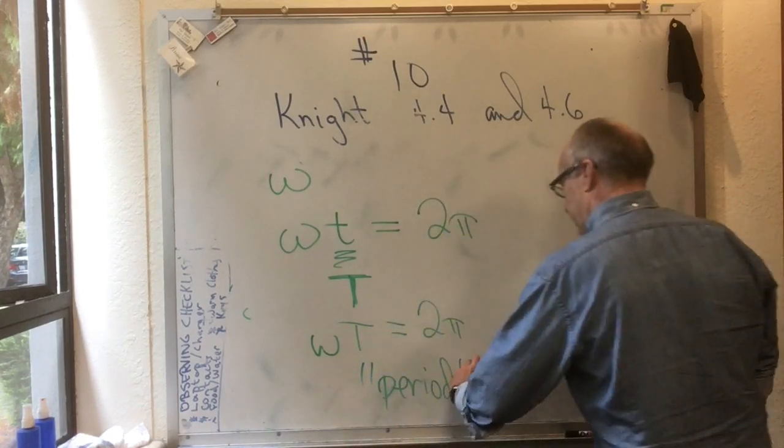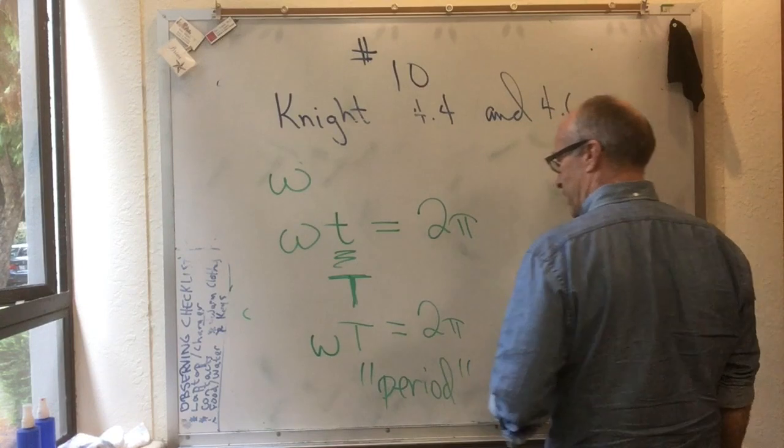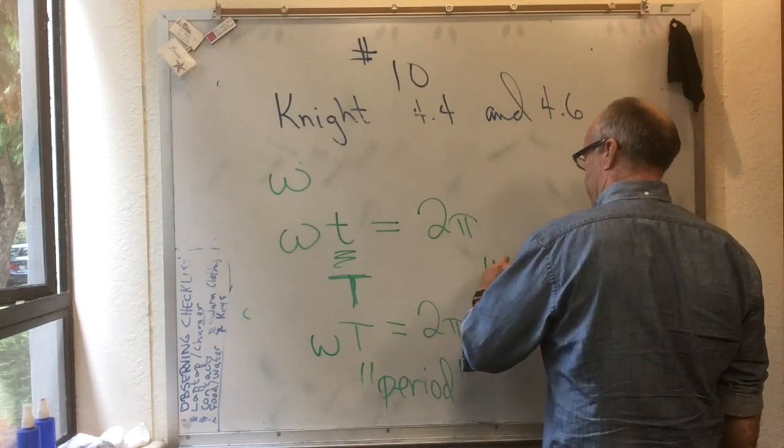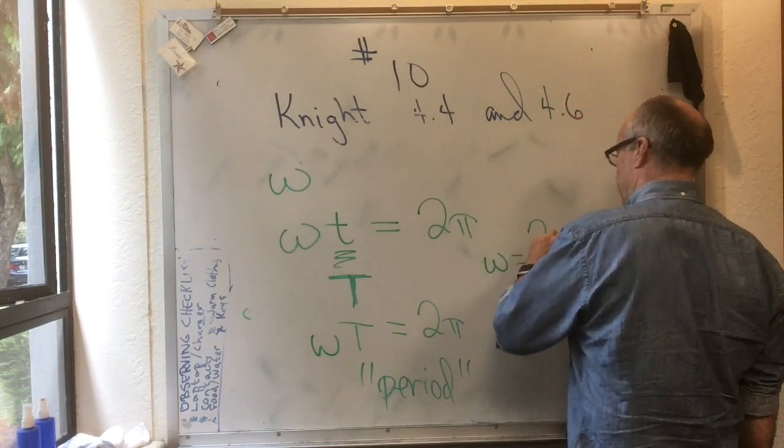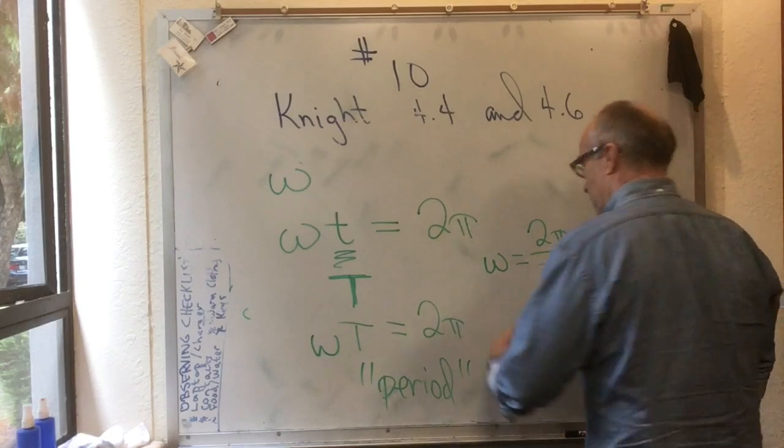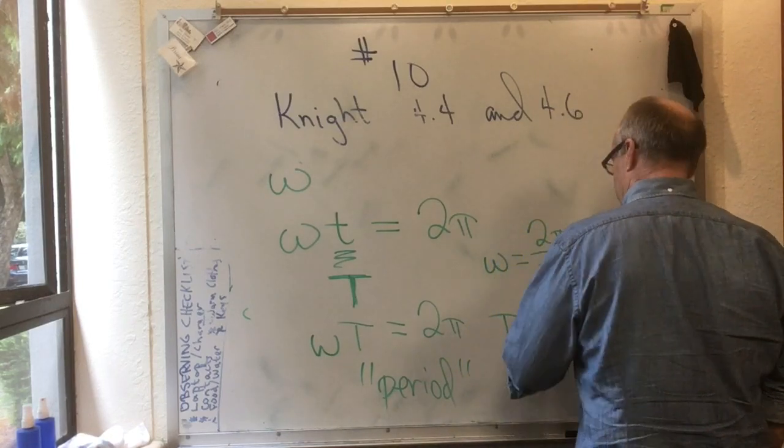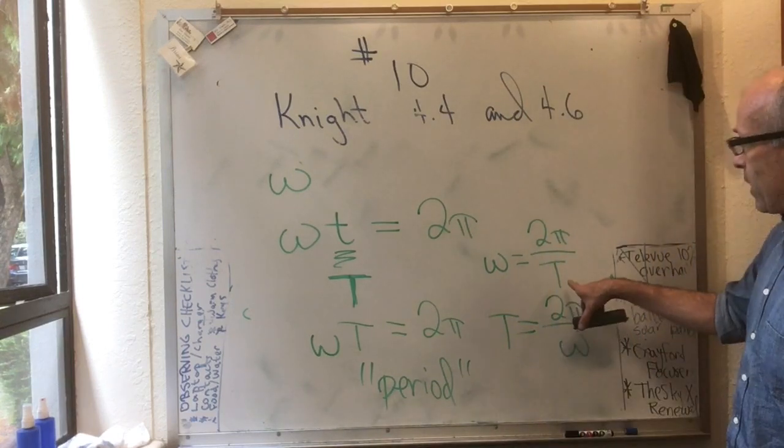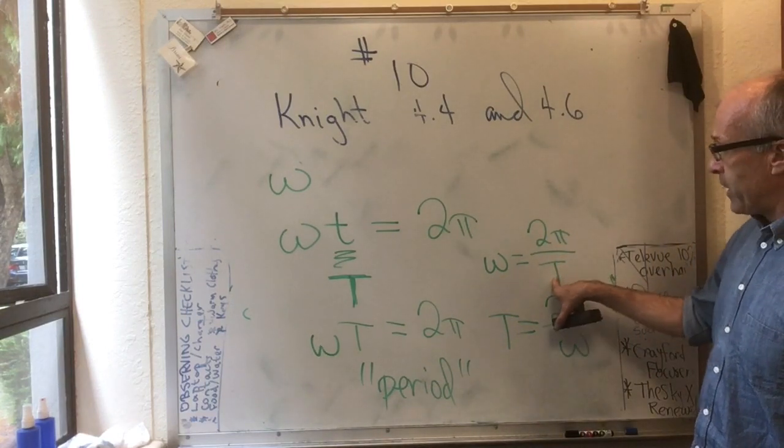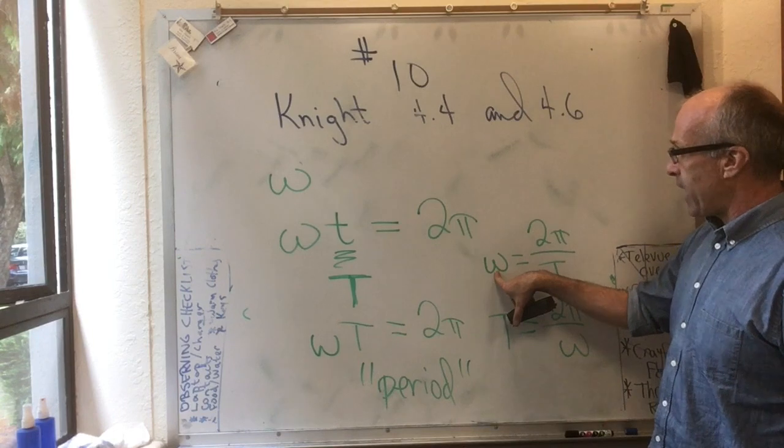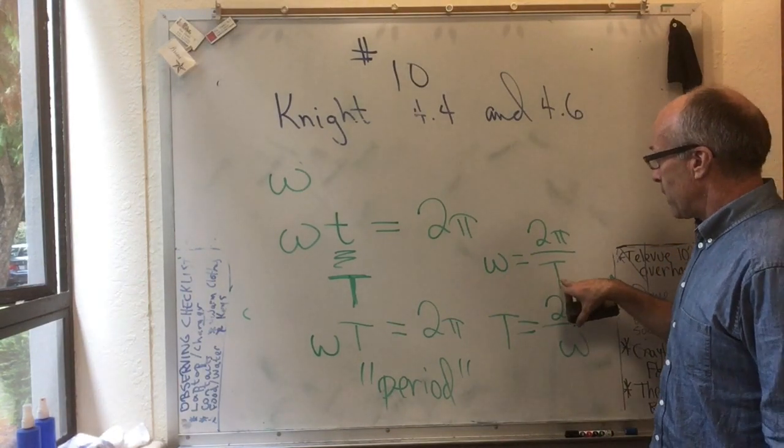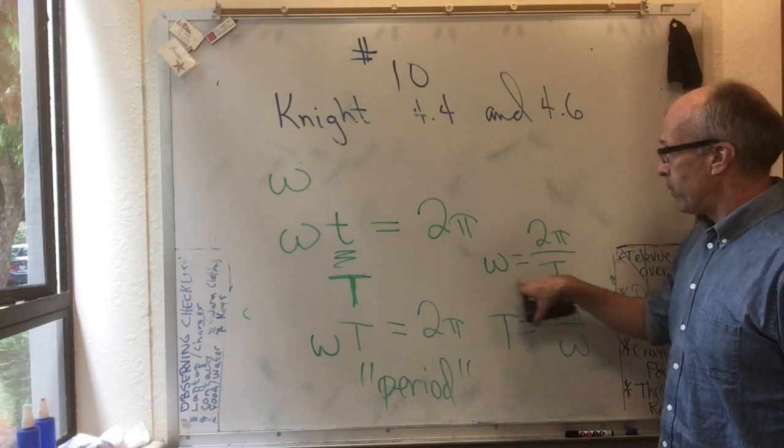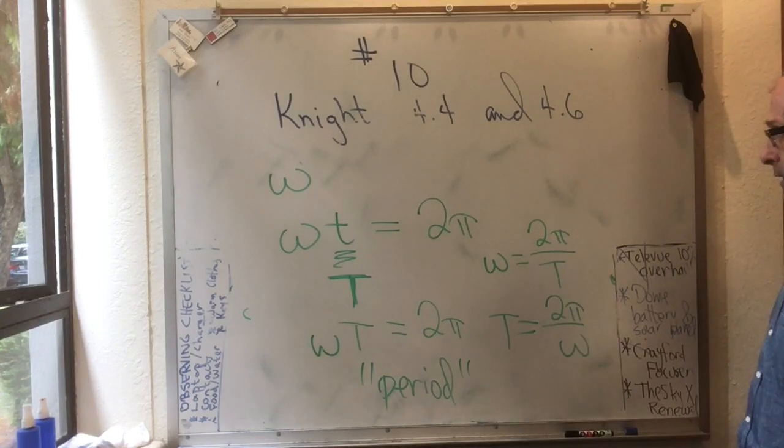Now we can solve it. We can say omega is equal to 2π over T. Or we can also say T is equal to 2π over omega. So a very short period results in a high angular velocity, or a very long period results in a low angular velocity.